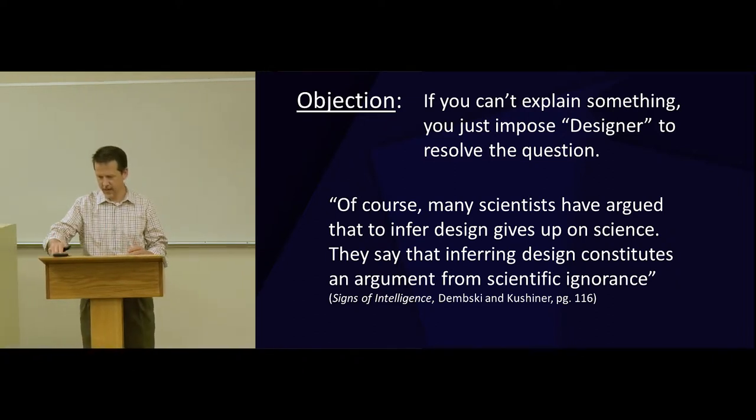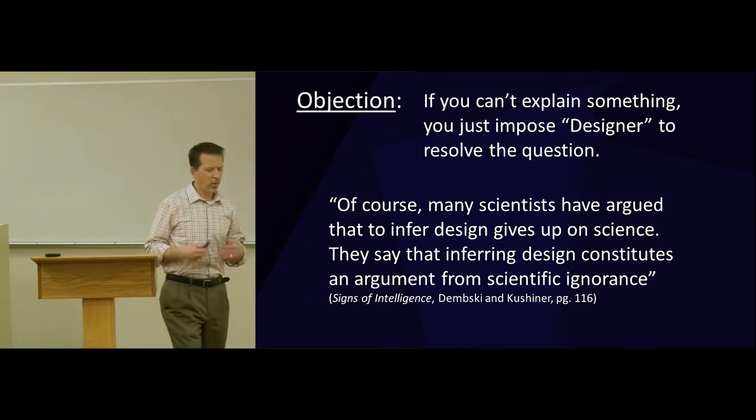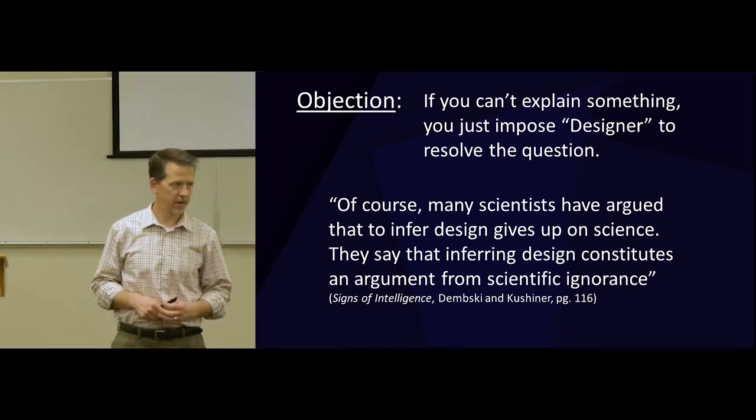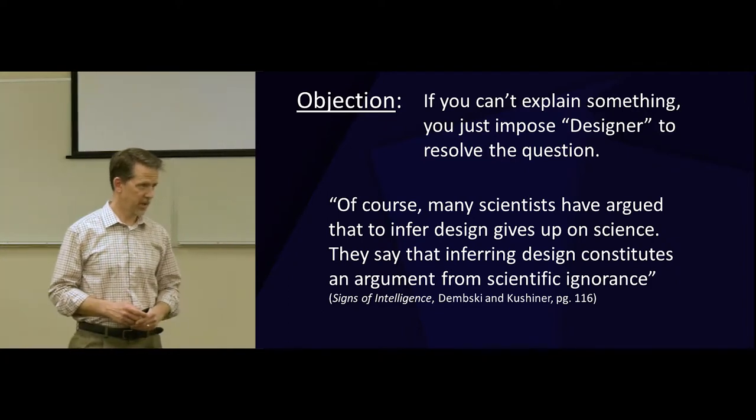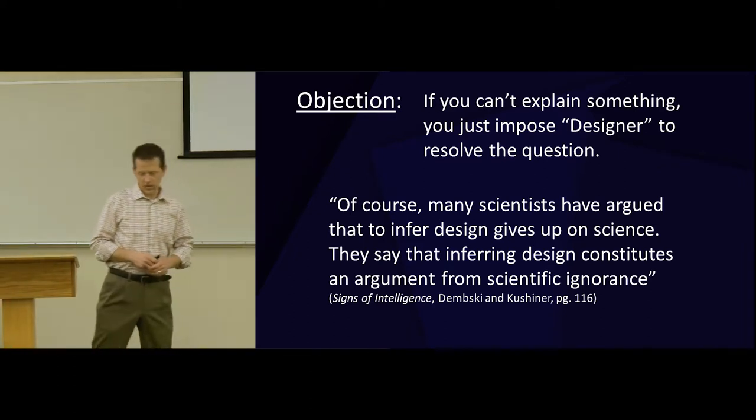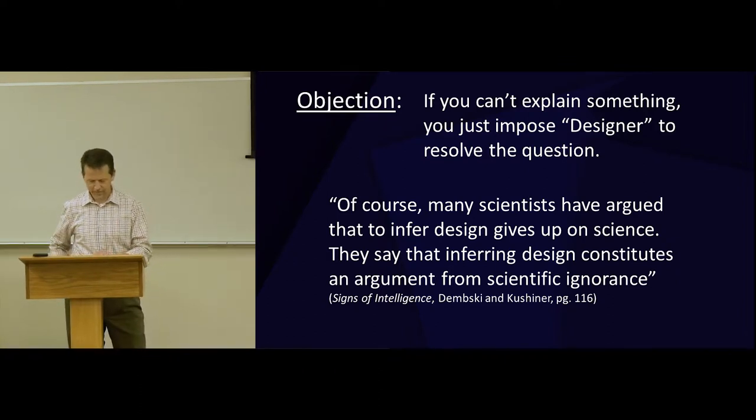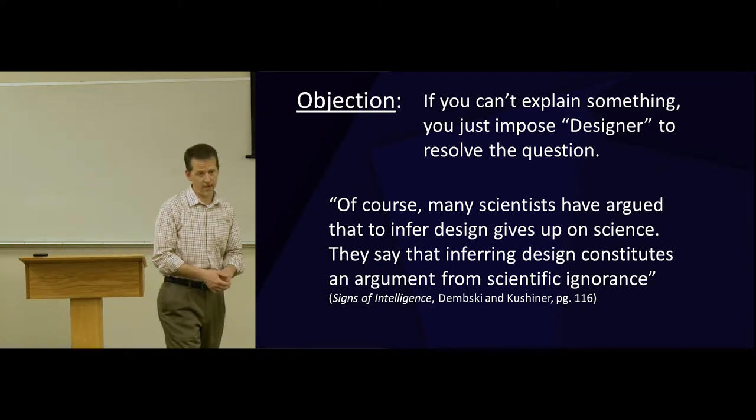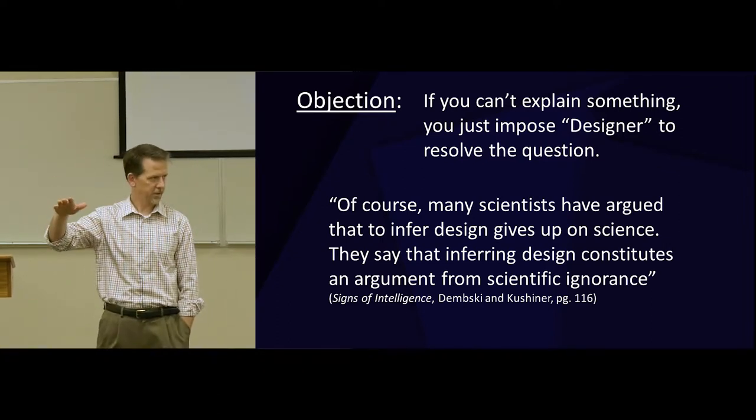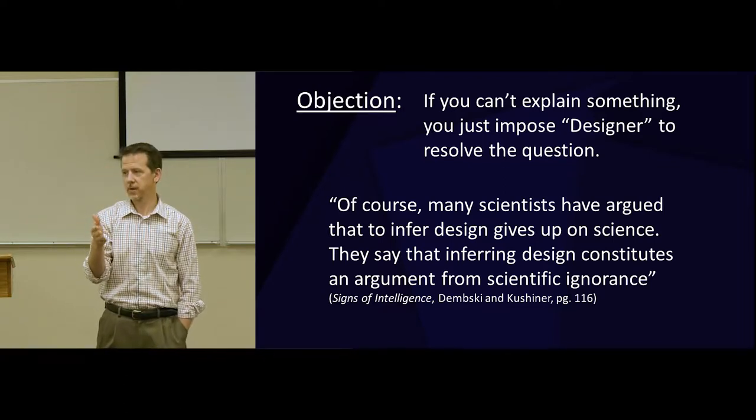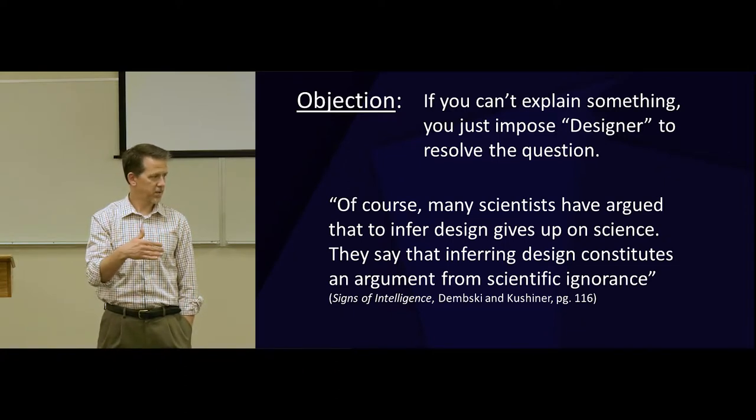Here's some common objections to the idea of intelligent design. Why is intelligent design not acceptable? Fiercely opposed, in fact. Why so? Well, here's one reason. One objection to intelligent design is this. Look, here's the problem with you people who like to espouse this kind of idea. If you can't explain something, you just impose a designer to resolve your questions. And you stop searching. In fact, this is a really common argument. That if you don't know an answer, you just say, well, God did it. And then you stop looking for answers. That is so demonstrably false as to just be ridiculous.